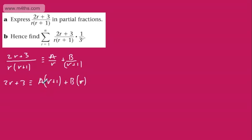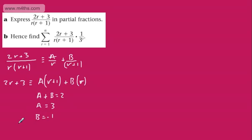Considering the terms in R: AR plus BR equals 2R, so A plus B equals 2. And then if we look at the constants, A is going to be equal to 3. So we can now say that B must be equal to minus 1. What we've got then, if we express this in partial fractions, is 3 over R minus 1 over R plus 1.